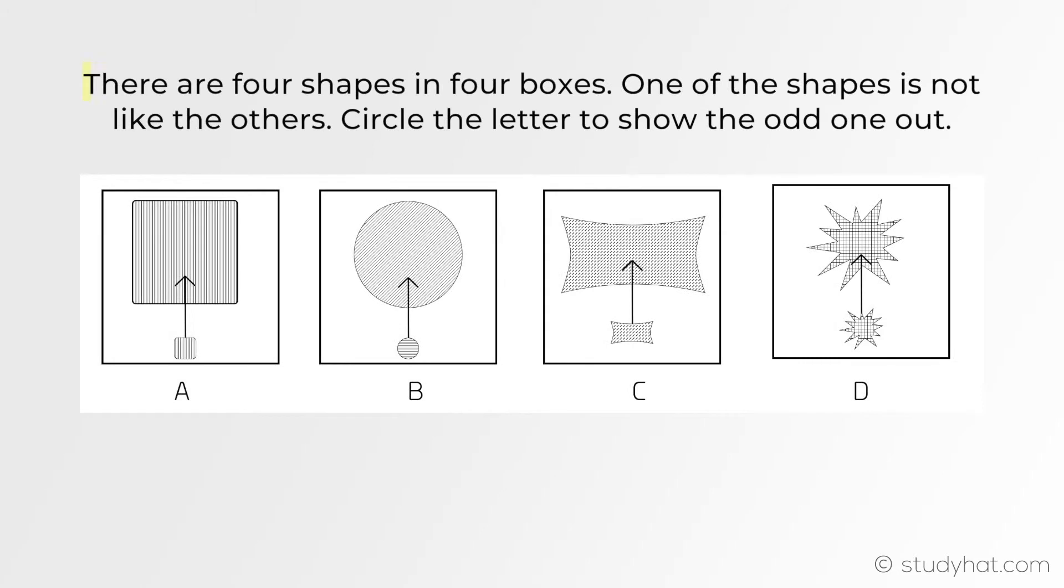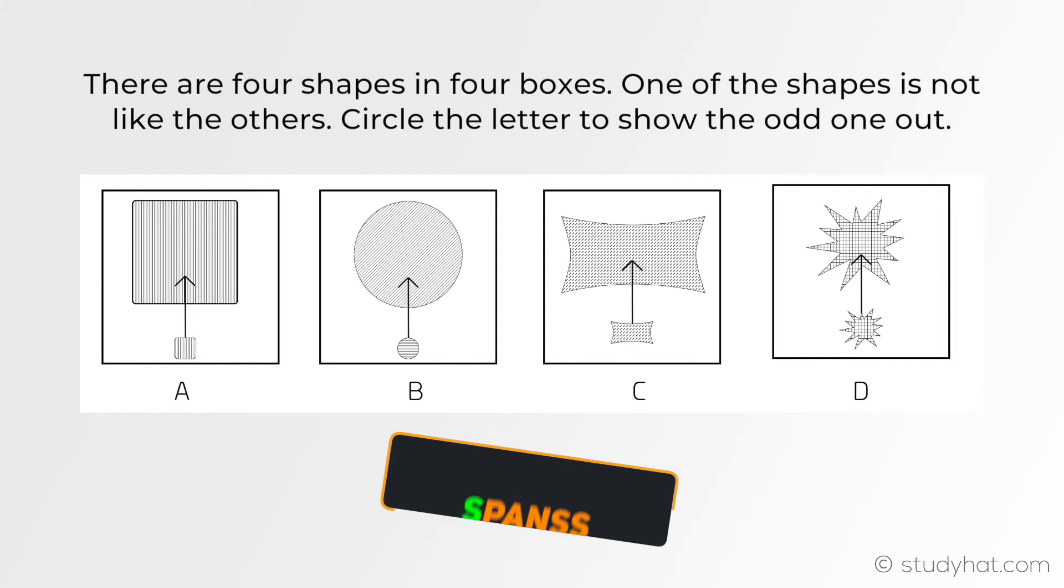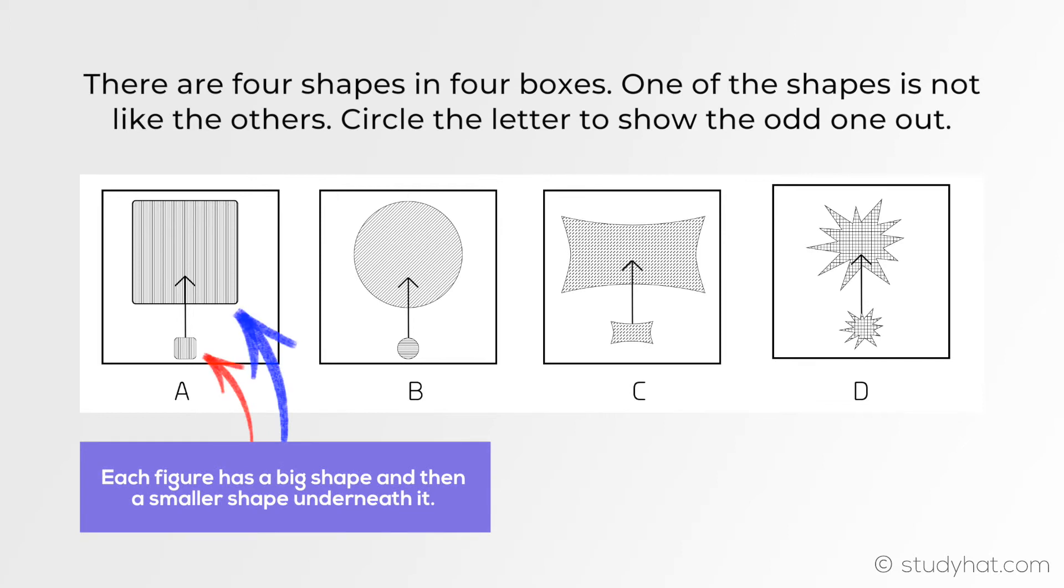Moving on to something more challenging. The question says there are four shapes in four boxes. One of the shapes is not like the others. Circle the letter to show the odd one out. What I'll do once again is write down anything I notice by going down the list of SPANSS starting with shape.